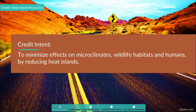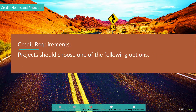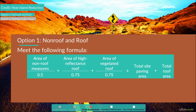Credit Intent: To minimize effects on microclimates, wildlife habitats, and humans by reducing heat islands. Credit Requirements: Projects should choose one of the following options. Let's start with Option 1, Non-Roof and Roof. Projects pursuing this option should meet the following formula.